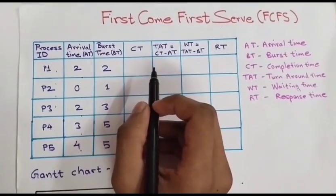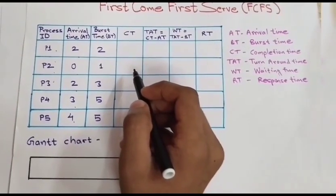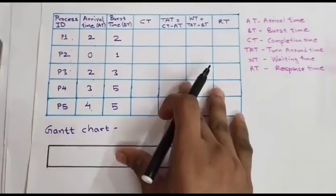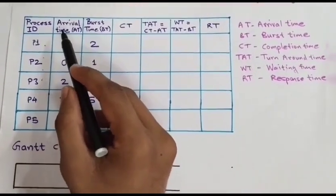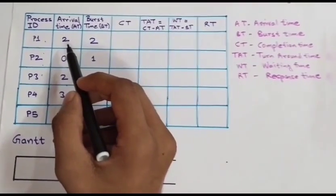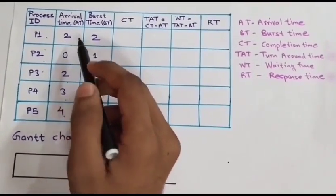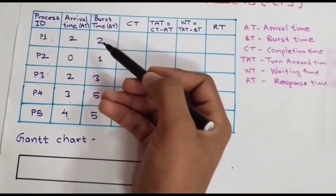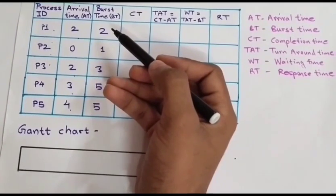I am taking one simple example for this FCFS. With the help of this example we are going to discuss FCFS. We have 5 processes. Arrival time of every process is given. Arrival time means it is the time at which the process arrives in ready queue. Burst time is given. Burst time is the unit of time in which a particular process completes its execution.